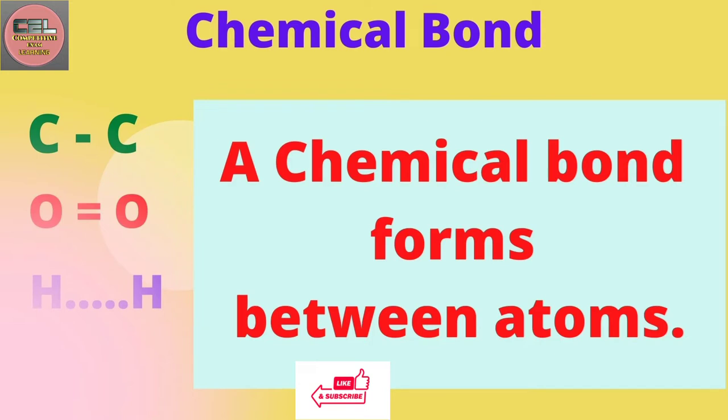A chemical bond is a bond that forms between atoms. These atoms may be the same or may be different types.